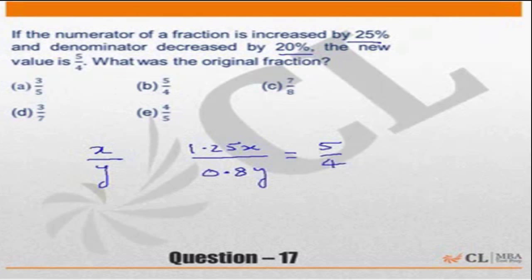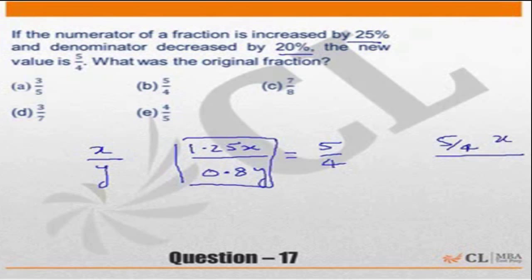But a slightly different way of looking at this question could be instead of writing it like this, I could have written the new fraction as the numerator becomes 25% more so it becomes 5 by 4 times of the original fraction. And the denominator becomes 20% less so it should be 4 by 5 times.